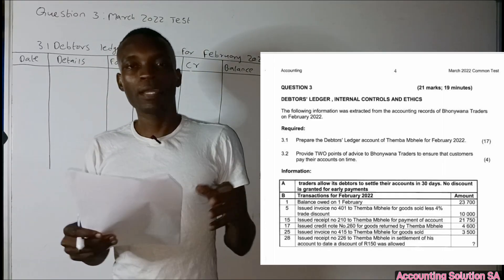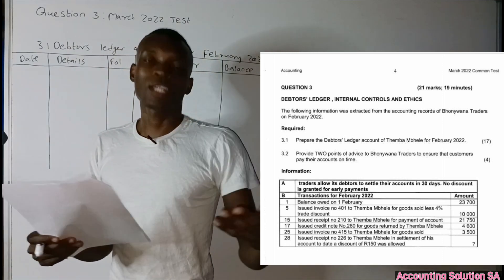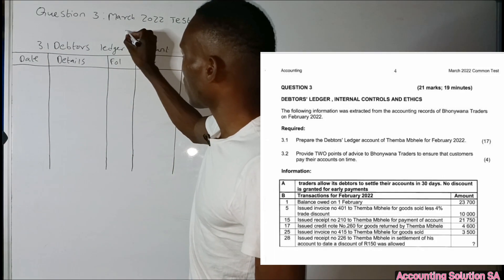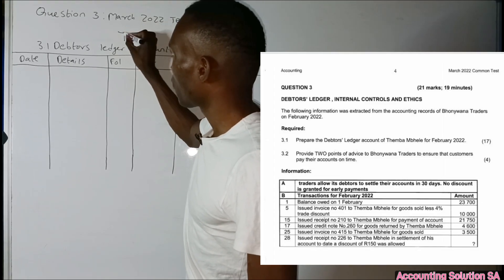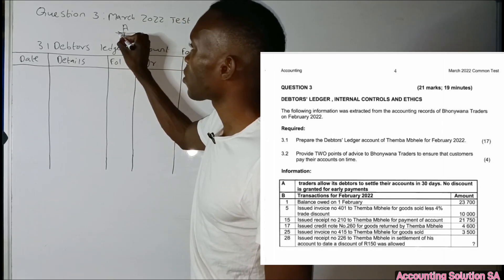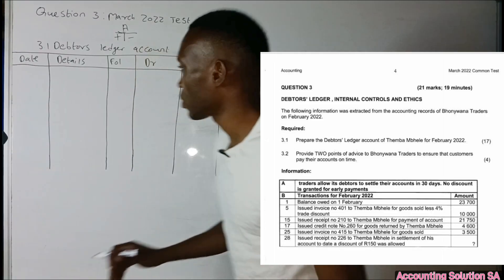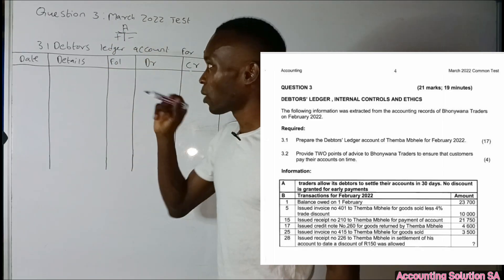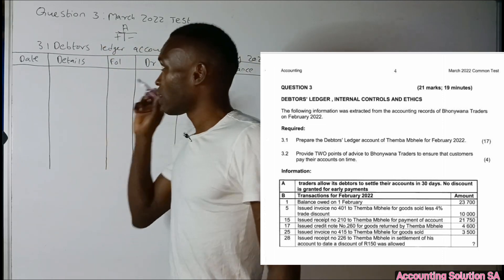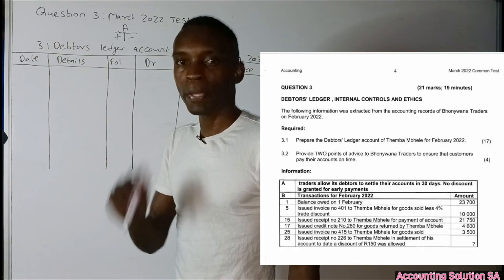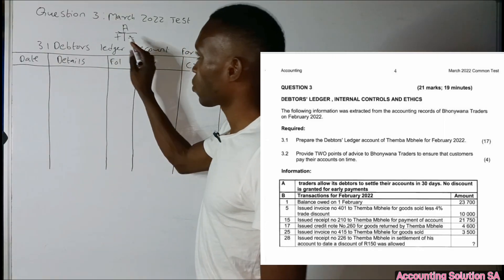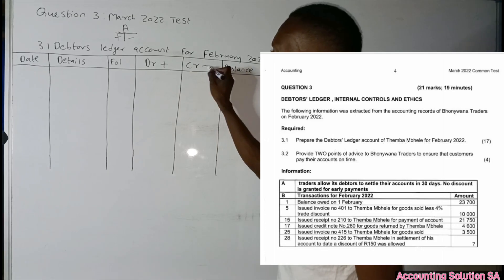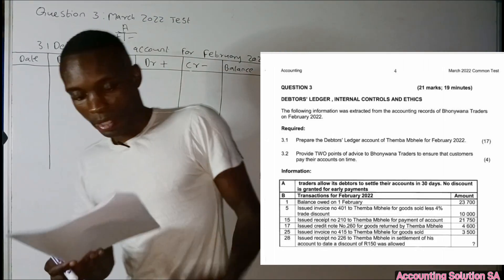In this question, we prepare the account for Timber Bale, our customer who purchased on credit. A debtor is an asset. If you remember the accounting equation, assets increase on the debit side and decrease on the credit side. So whatever we record on the debit side indicates that this person's debt is increasing. If they paid, meaning the debt is decreasing, we record it on the credit side. We can show it as plus on the debit and minus on the credit, and then we record the balance.